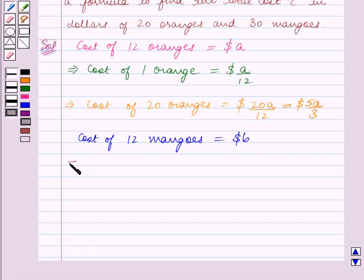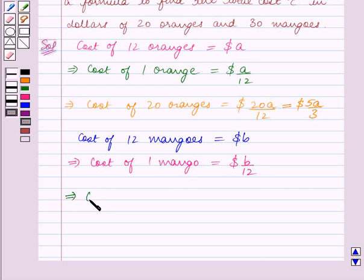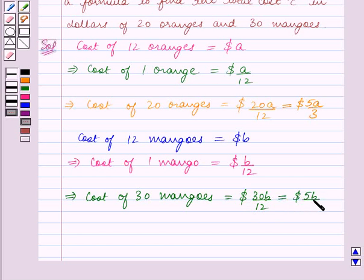This implies cost of one mango is equal to B upon 12 dollars. This implies cost of 30 mangoes is equal to 30B upon 12 dollars which is equal to 5B upon 2 dollars.